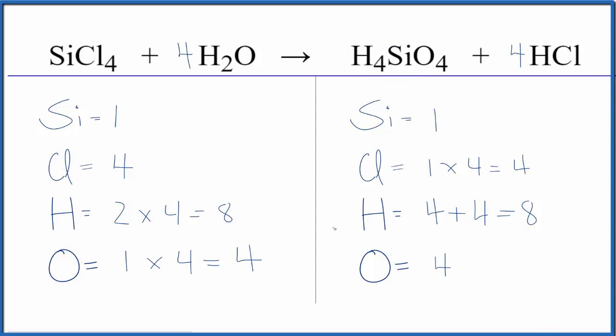Another trick is to leave the oxygens and hydrogens till last when balancing equations. This is Dr. B with the balanced equation for SiCl4 plus H2O, silicon tetrachloride plus water. Thanks for watching.